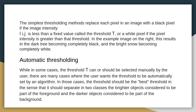For example, in the image on the right, this results in the dark tree becoming completely black and the bright snow becoming completely white.